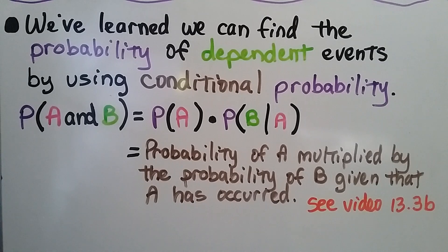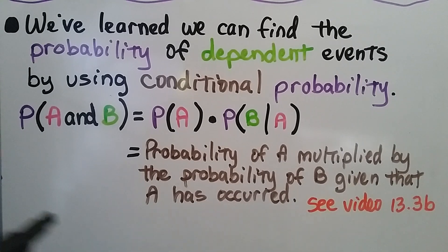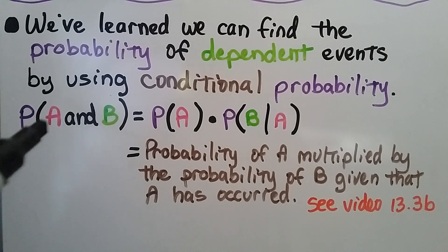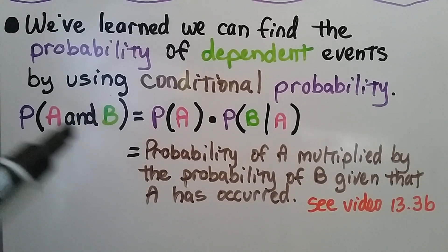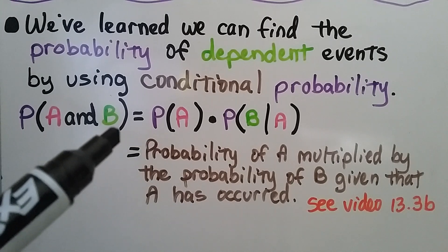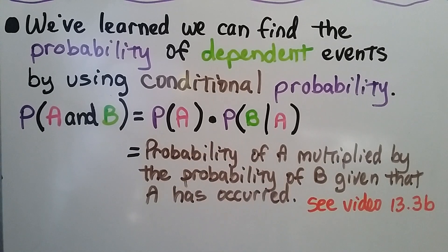We've learned we can find the probability of dependent events by using conditional probability. We learned this in the lesson right before this one and remember that's linked in the description if you need it. The probability of A and B, given they're dependent on each other, equals the probability of A multiplied by the probability of B given that A has occurred.